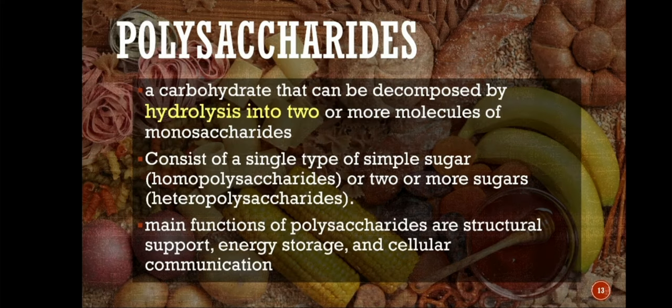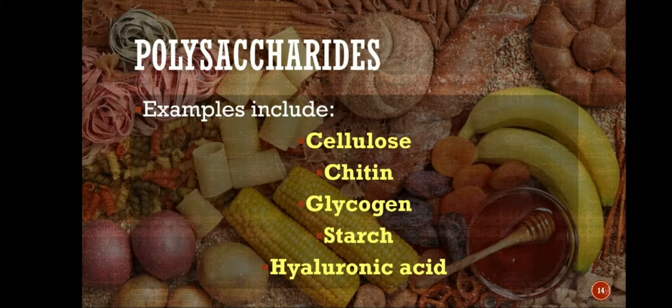Polysaccharides are carbohydrates that can be decomposed by hydrolysis into two or more molecules of monosaccharides. They consist of a single type of simple sugar, which is homopolysaccharides, or two or more sugars, which is heteropolysaccharides. The main functions of polysaccharides are structural support, energy storage, and cellular communication. Examples of polysaccharides include cellulose, chitin, glycogen, starch, and hyaluronic acid.